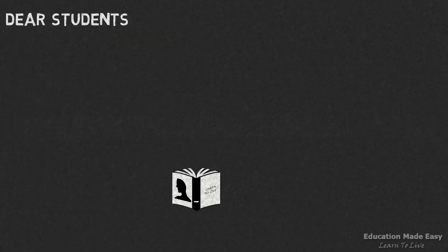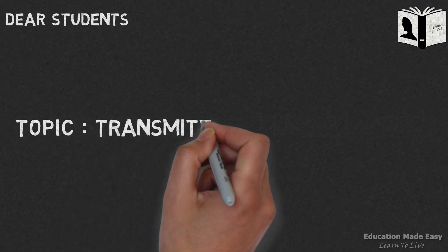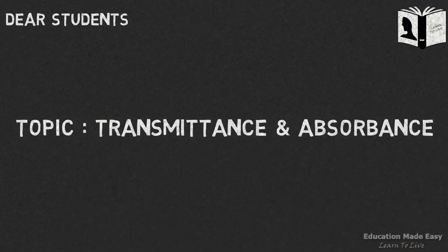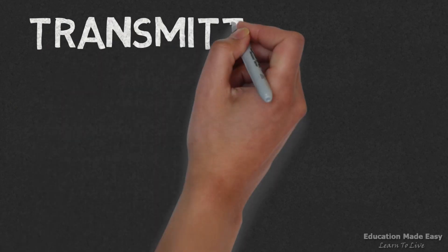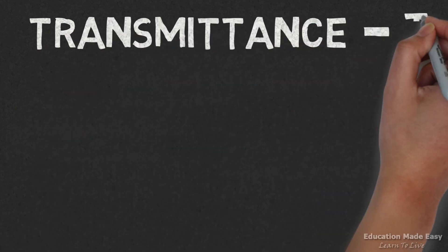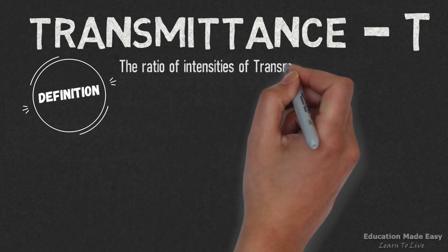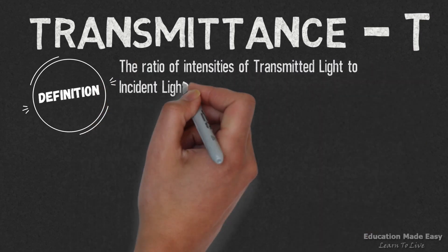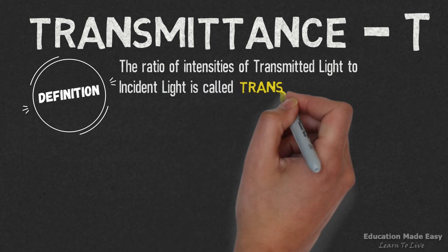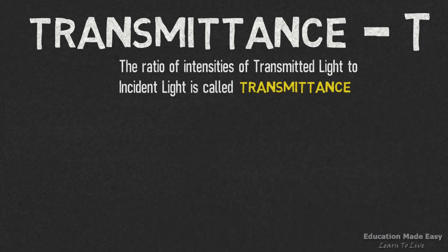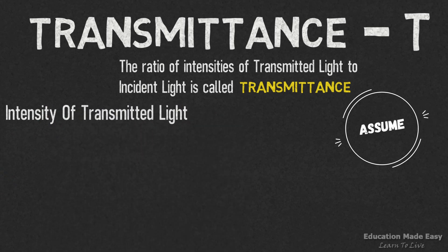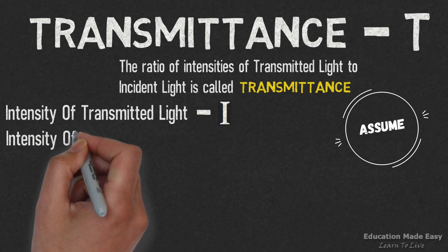Welcome to Learn to Live. This video is based on the topic transmittance and absorbance. Let us first start discussing about transmittance. It is denoted by the simple T. As per the definition, the ratio of intensities of transmitted light to incident light is called transmittance. Let us assume intensity of transmitted light as I and intensity of incident light as I₀.